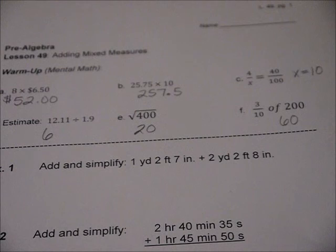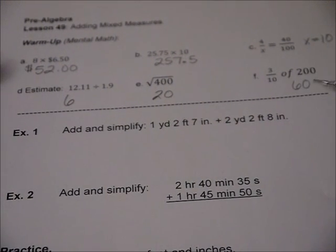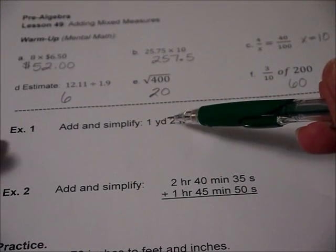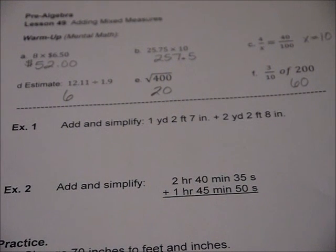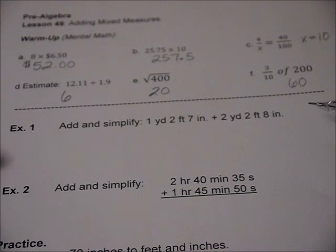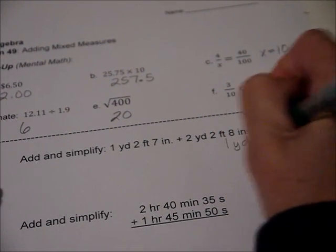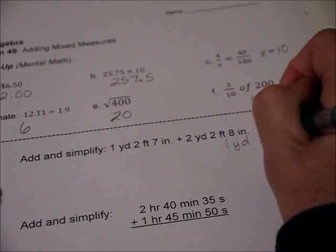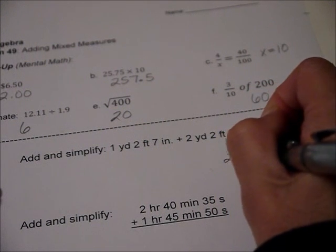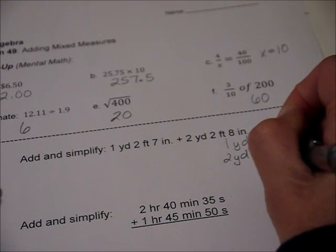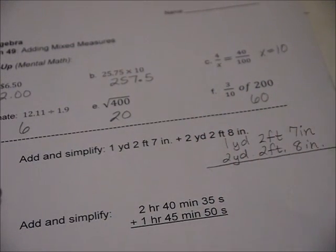Alright, so let's go ahead and look at this. We're going to be adding things like yards, feet, inches. Now we often measure in that, and let's see what happens when we add those together. Let's go ahead and do it vertically: one yard two feet seven inches, and then down here we have two yards two feet eight inches.